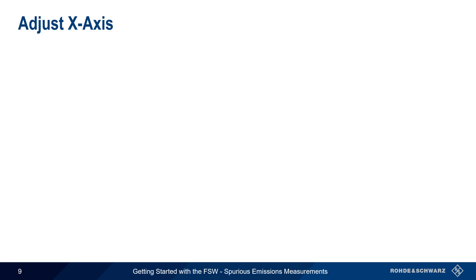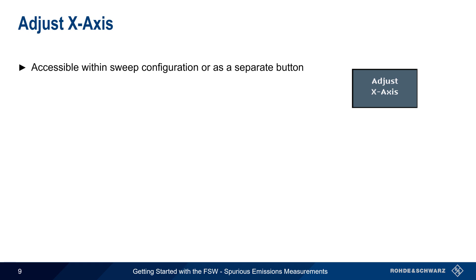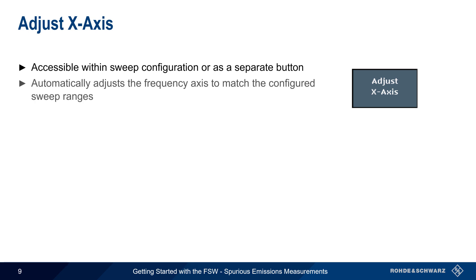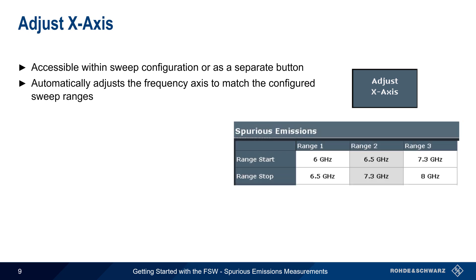Before we look at how results are shown, it's worth taking a moment to explain the Adjust X-axis button, which is available both within the sweep configuration dialog or from the main measurement window. Pressing this button automatically adjusts the frequency axis — that is, the start and stop frequencies — to match the configured sweep ranges.